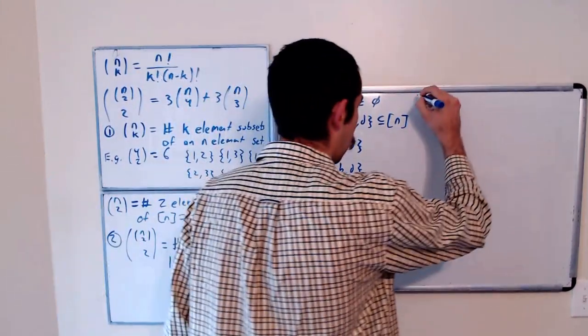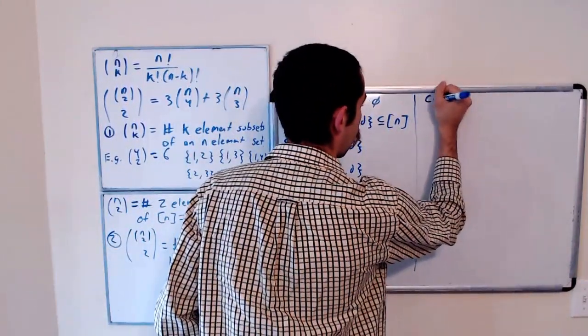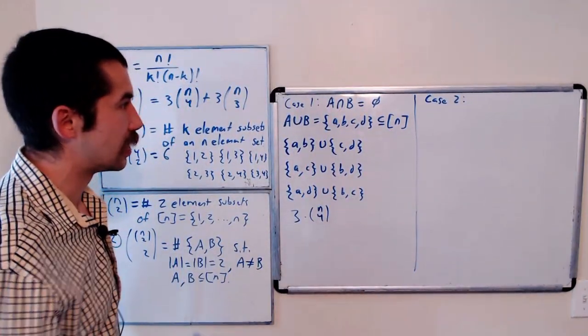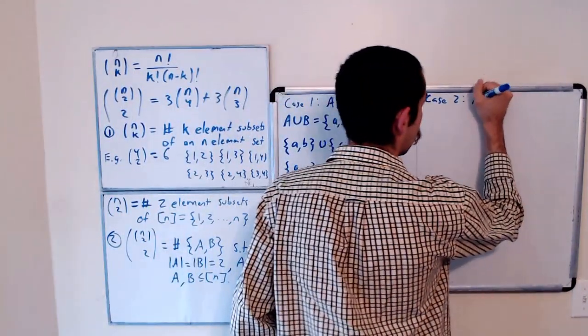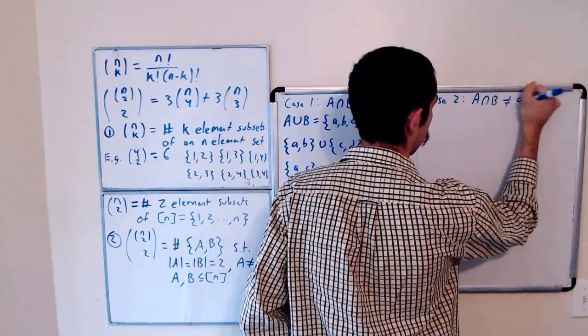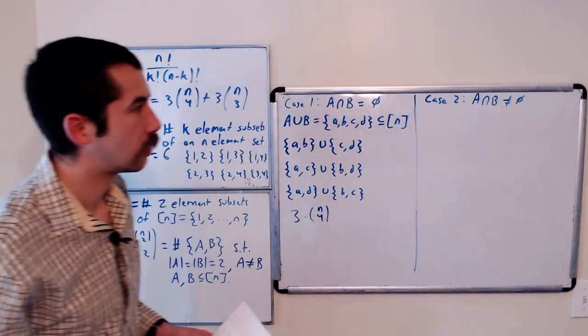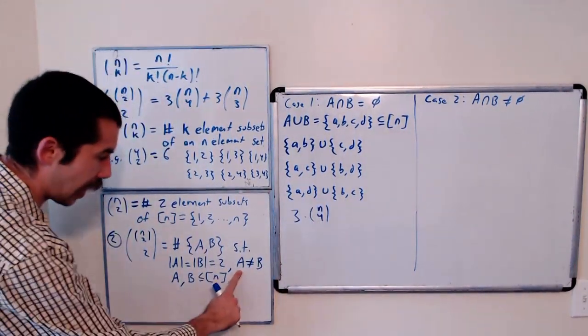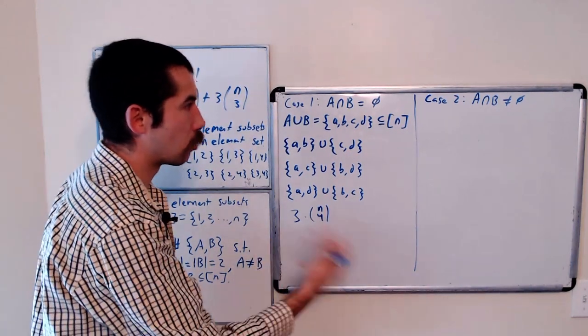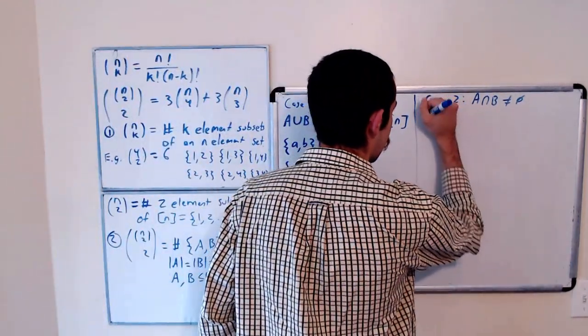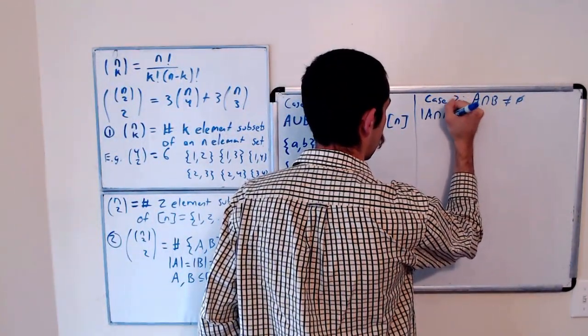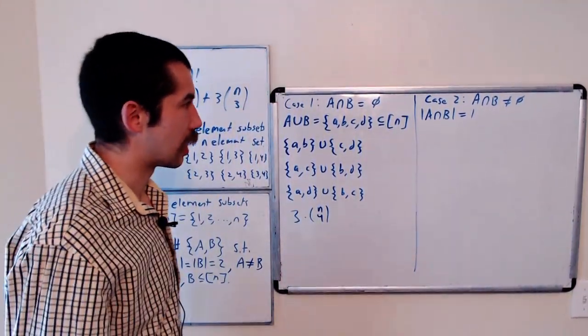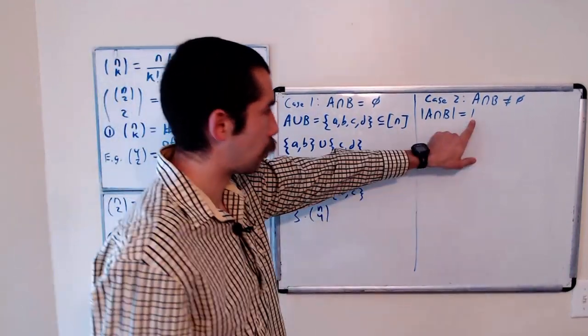And now case 2 is that a intersect b is not empty. Okay, but we said that a does not equal b. So the size, so in this case, the size of this intersection is 1. So we can't have a total, they can't be the same set. But they could overlap with one element.